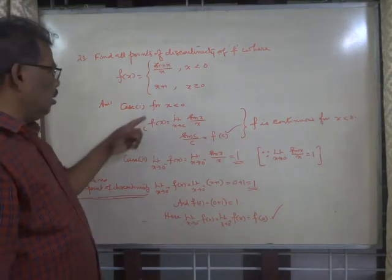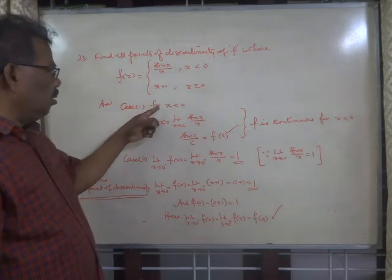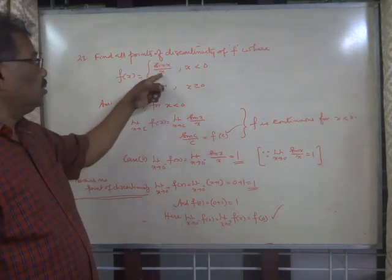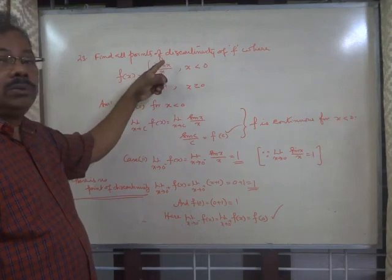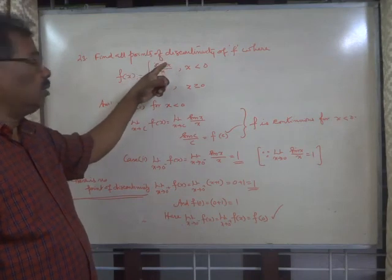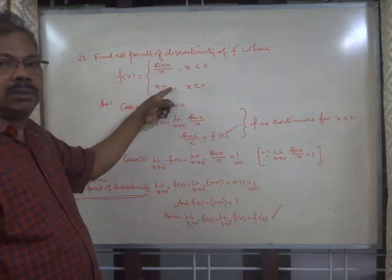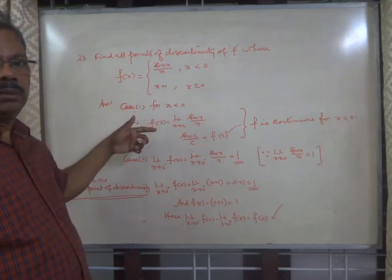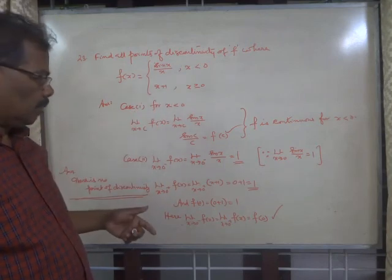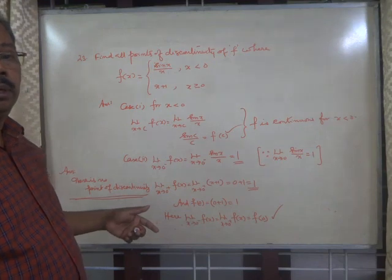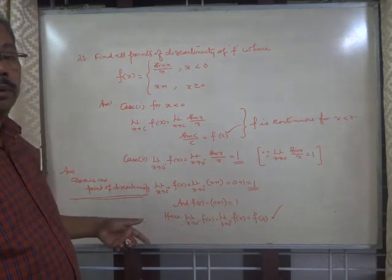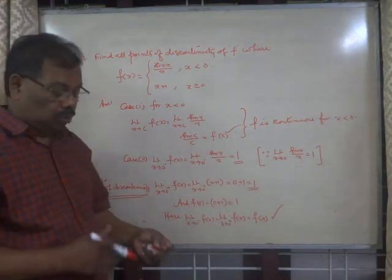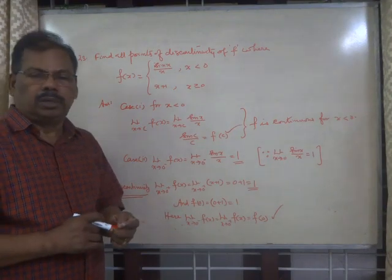For values x less than 0, this is the function, and for values x greater than 0, this is the function. We have checked both cases and the function is found to be continuous everywhere, so there is no point of discontinuity.